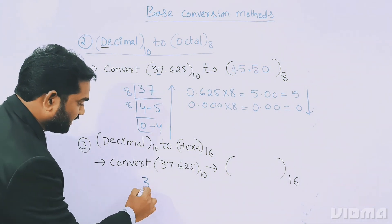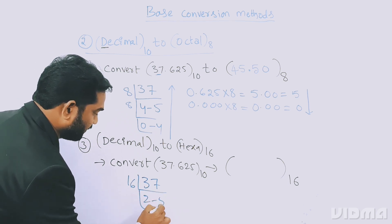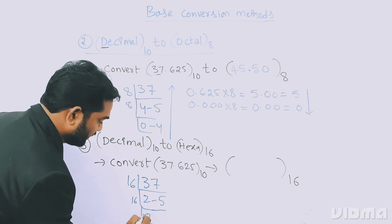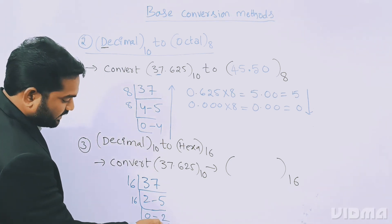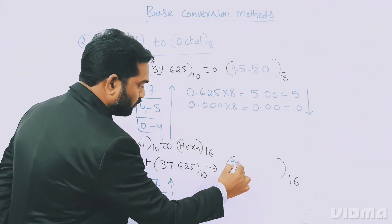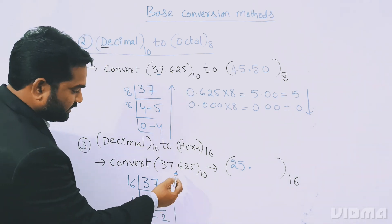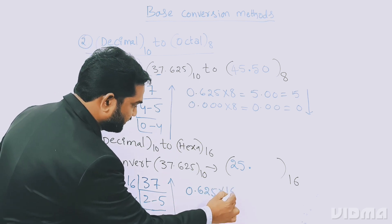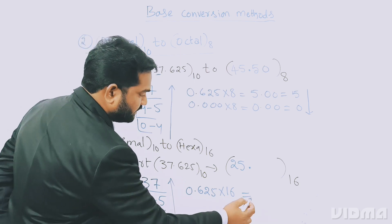37 divided by 16: 16 goes two times giving 32, remainder is 5. Then 2 divided by 16 — it cannot be divided, so 0 with remainder 2. Writing from bottom to top, the integer part is 2 5. Now for the fractional part: 0.625 × 16.